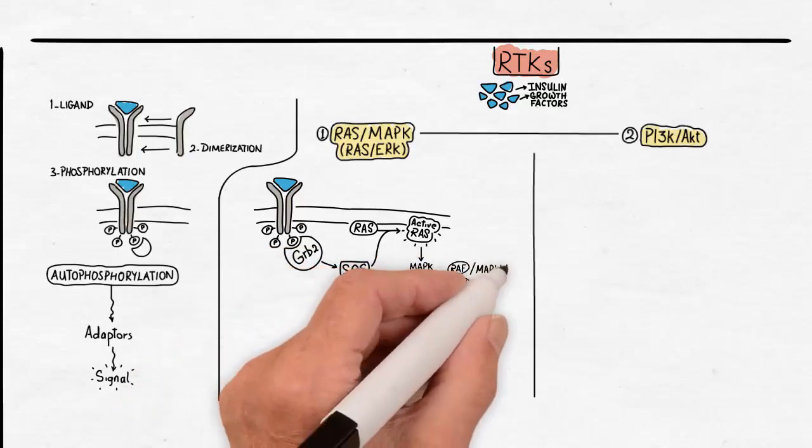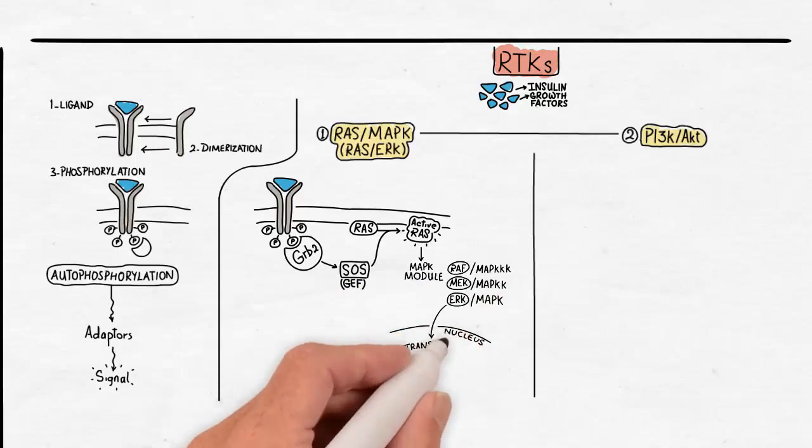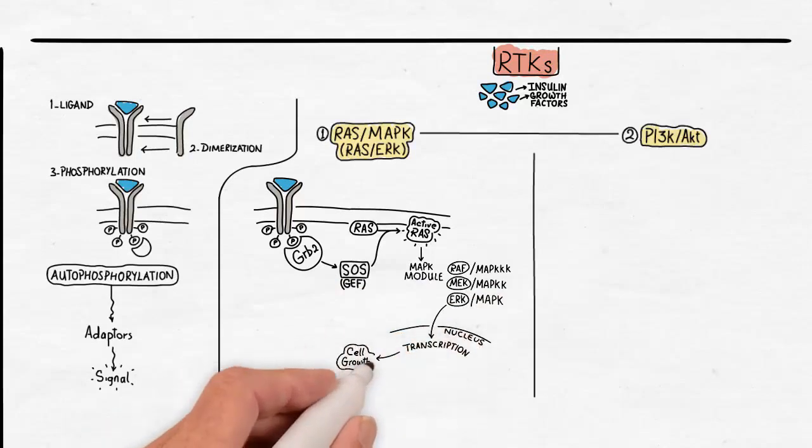This cascade occurs on a complex structure called MAP kinase module. The MAP kinase module consists of three kinases in sequence, each one phosphorylates the next. These kinases are called RAF, MEK, and ERK. And the last one is the MAP kinase itself.